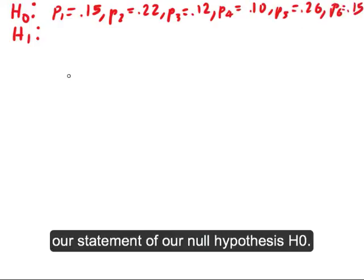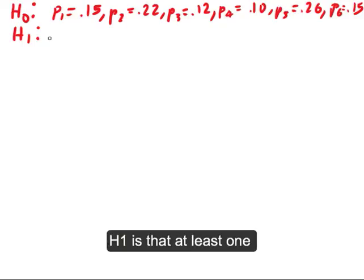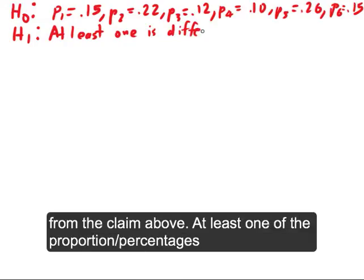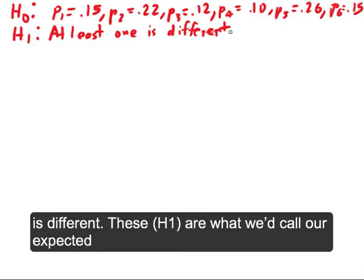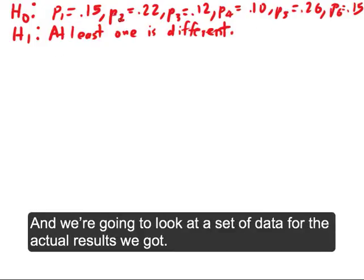So that's our statement of the null hypothesis. And then H1 is that at least one is different from the claim above. At least one of the proportions, one of the percentages is different. So these are what we'd call our expected proportions. These are the expectation or the claim, and then we're going to look at a set of data to look at the actual results that we got.